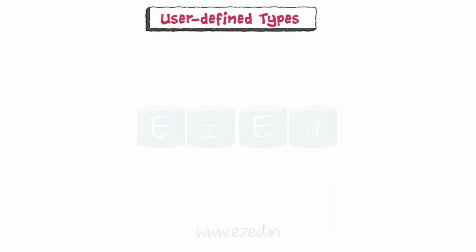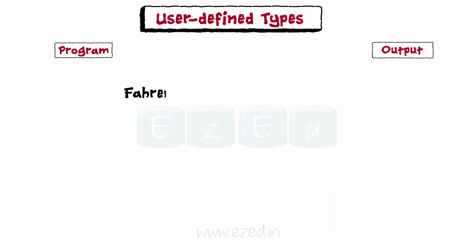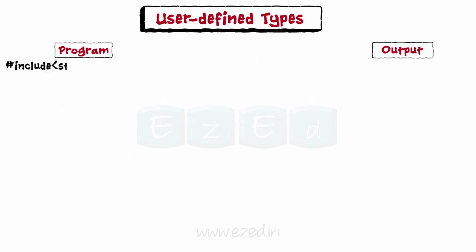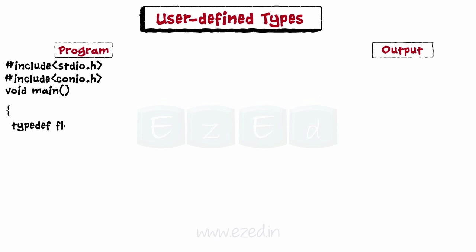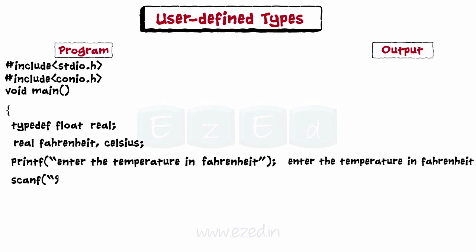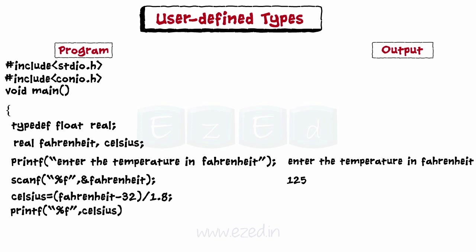Let's write a program to convert temperature in Fahrenheit to degrees Celsius. We start by declaring the main function, then use typedef to define a float type variable named 'real'. Real is again used to define other variables, namely Fahrenheit and Celsius. We then ask the user to enter the temperature in Fahrenheit, store it in the variable Fahrenheit, convert it to Celsius using the formula, and finally print the value.